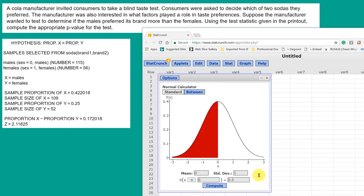The default is the standard normal distribution, which is what we want. We need to read the problem. The manufacturer wants to know if males preferred the cola more than females. That tells us that the alternative hypothesis is that the proportion in the male sample is greater than the proportion in the female sample.